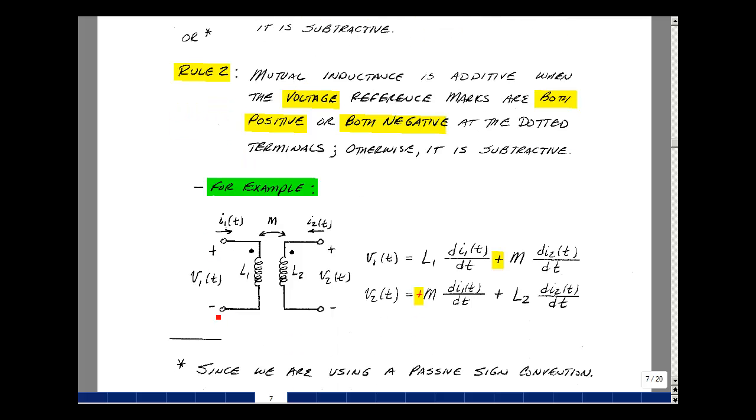Here we've got a voltage V1, a voltage V2, and a current I1 and I2, and then the dots on both coils.